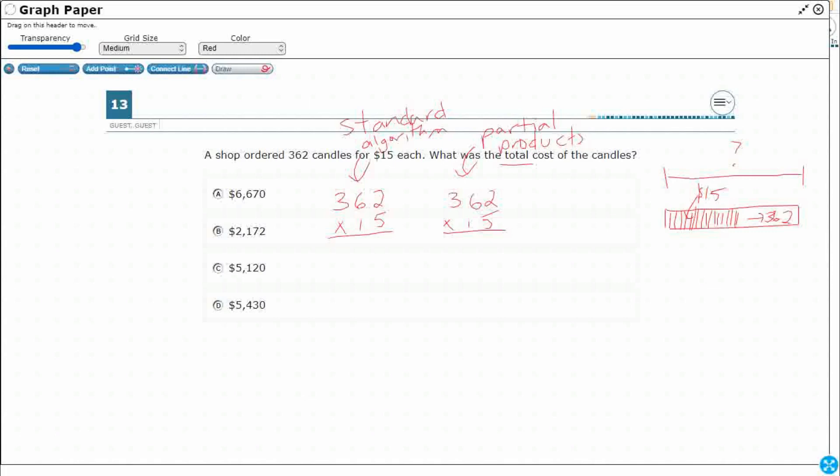So standard algorithm, what we do here is we start with this five and we're just going to multiply by the two and then the six and then the three. And we can only write one digit at a time, so we're going to carry if it goes in the tens place. So I'll show you this first row right here. So five times two is 10. We can only write one digit at a time.